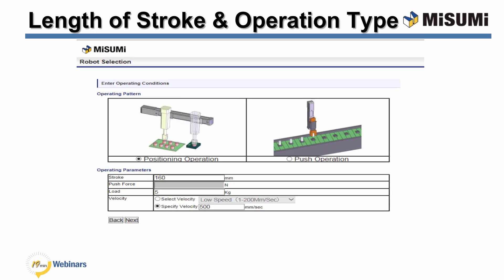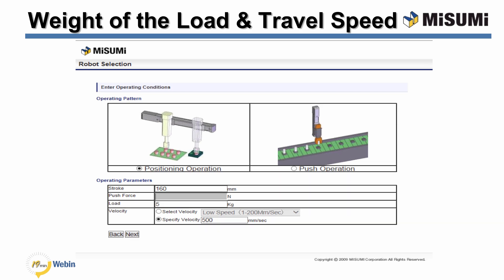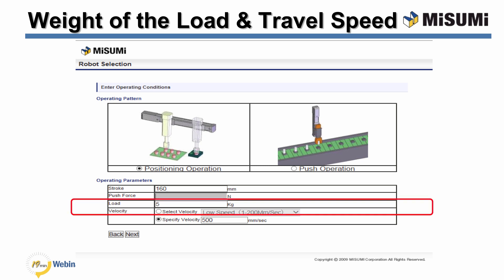With the RS with steppers, stroke goes from 50 millimeters to 800 millimeters. With the RS with servo motors, they go from 150 millimeters to 1,050 millimeters in stroke. The type of operation needed — whether positioning or moving parts, or pushing and assembling parts together — must be specified. Each robot type will have a different maximum payload depending on the model and the pitch of the ball screw. You'll also need to specify the maximum speed required for the application.